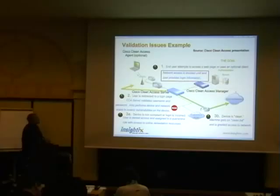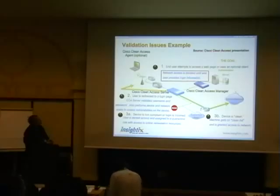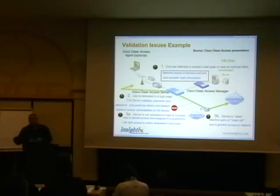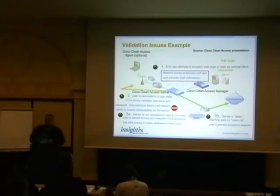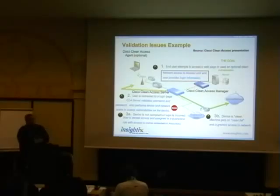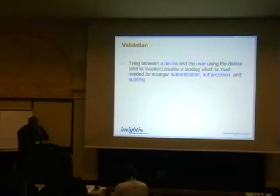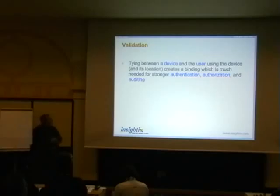Another example: network access is blocked until the end user provides login information — there is no relation whatsoever to the endpoint. Basically you bring your device, browse, you're presented with a captive portal telling you to download an agent, you put your username and password, and off you go. This is a problem. The binding between the device and the user is extremely important — it creates a binding needed for strong authentication, authorization, and auditing, and identity is something we're all looking to have stronger in our organizations.